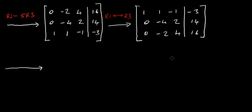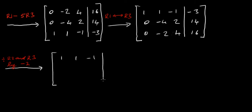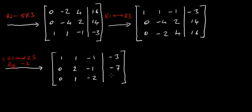Now I've interchanged rows, the next thing I'm going to do is divide rows two and three by minus two. So row one stays: 1, 1, minus 1, minus 3. Row two becomes: 0, 2, minus 1, minus 7. Row three becomes: 0, 1, minus 2, minus 8.